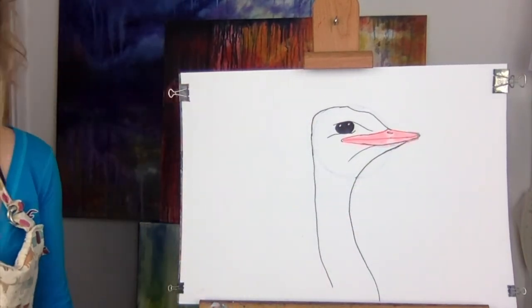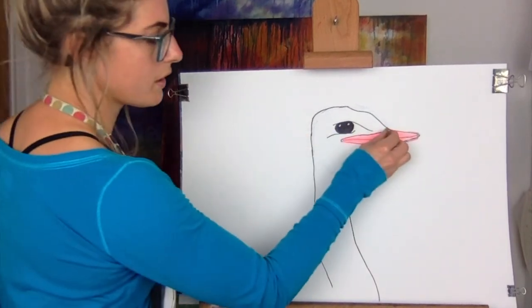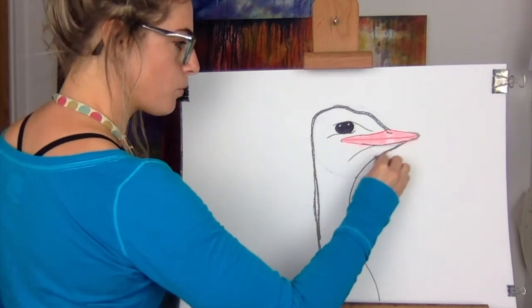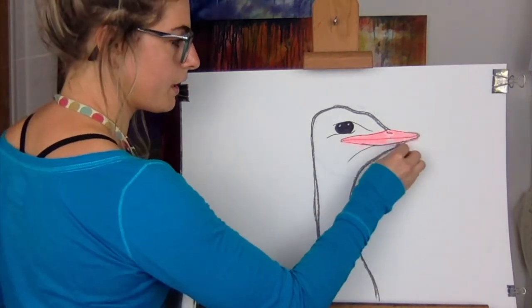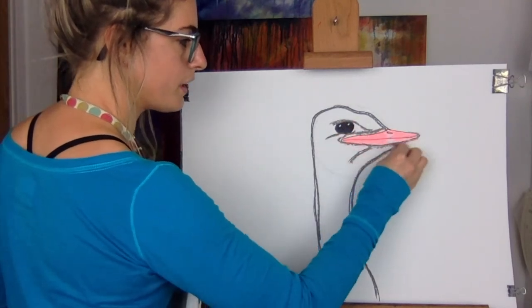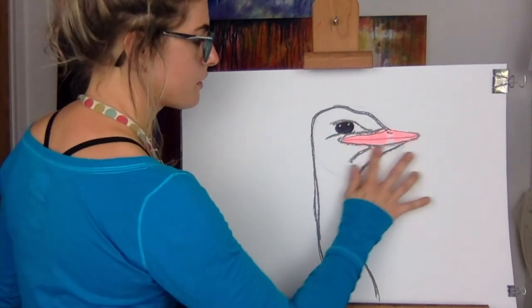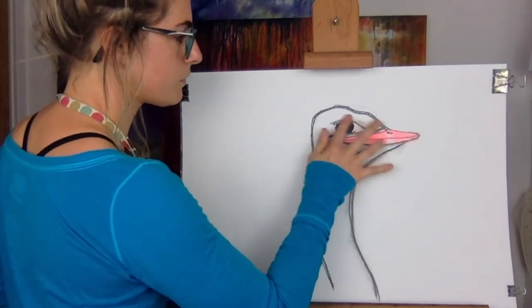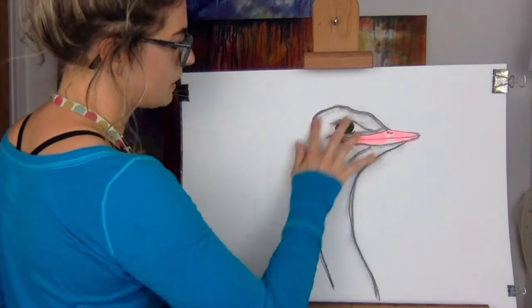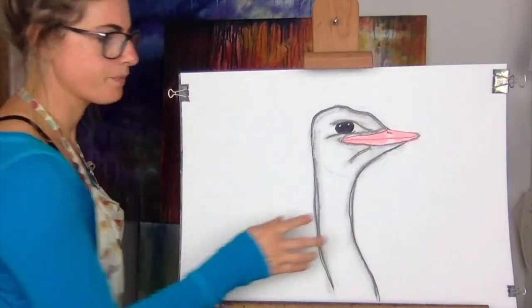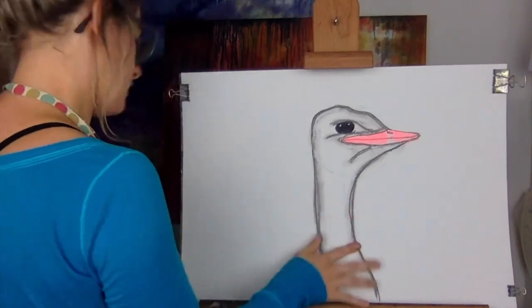And because my ostrich is white, I'm going to outline in grey. Because anything that's white, if you outline it with grey, it makes it just look like it's got more body to it. So I'm just going to smudge. I'm getting my one finger and I'm just smudging with that.